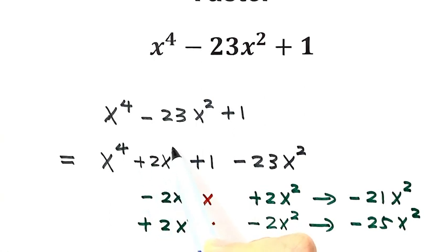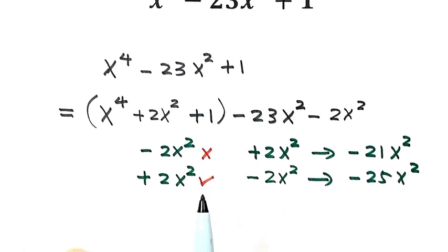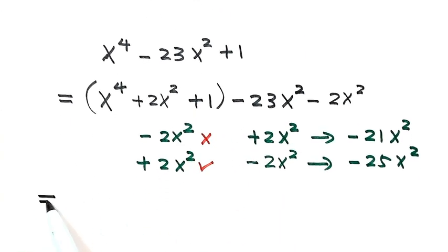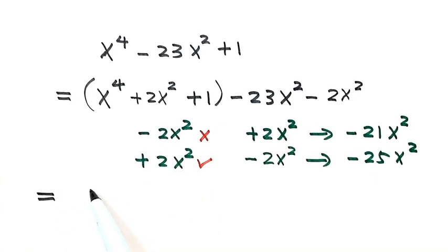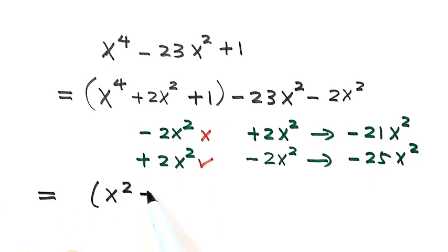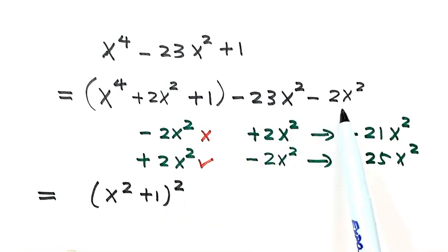These three terms make a perfect square: (x² + 1)². Combine the remaining terms together, that's negative 25x². Since 25 is 5², we have minus (5x)².